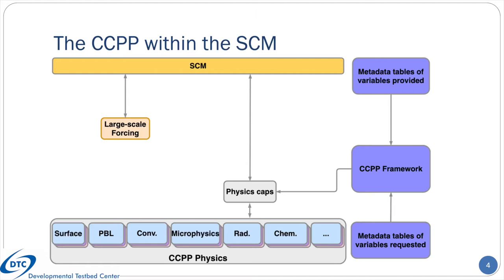For example, several different microphysics schemes, convection schemes, etc. One of the keys of the entire CCPP is that each of these physics schemes will have an associated file containing metadata. Metadata files contain information about what variables are communicated in and out of a physics scheme — they are a complete description of a scheme's data interface in a way that the CCPP framework can understand. Likewise, on the SCM side, there are similar metadata files that describe what variables it can provide to the physics. At model build time, the CCPP framework scripts are invoked to read metadata from the physics to construct or auto-generate a software cap that acts like a custom-made physics driver. The CCPP framework must also be given a description of the physics suite or suites for which to construct one or more software caps.